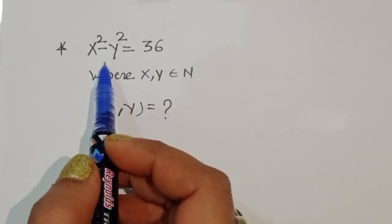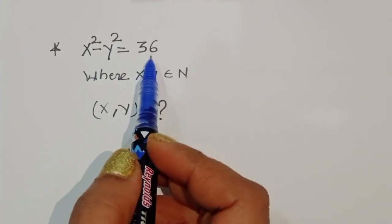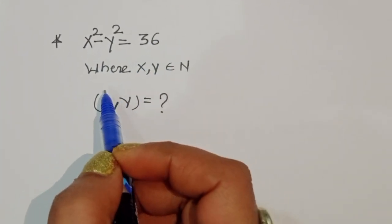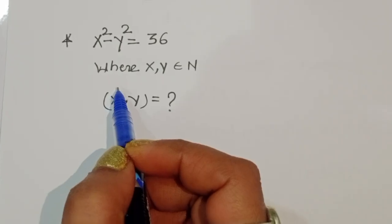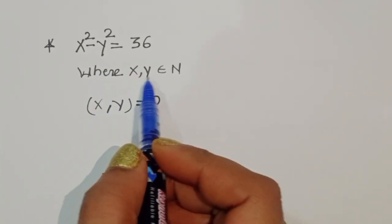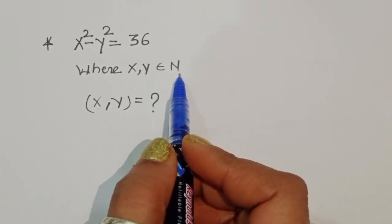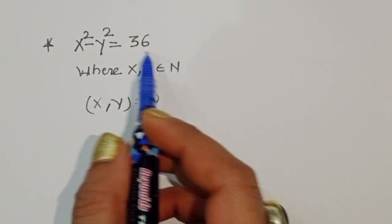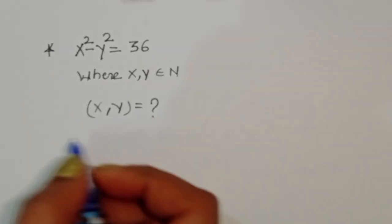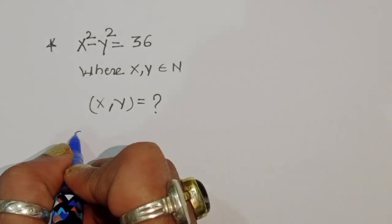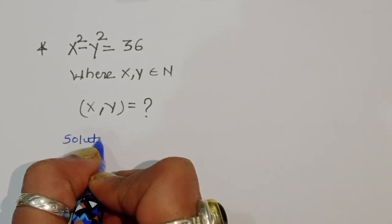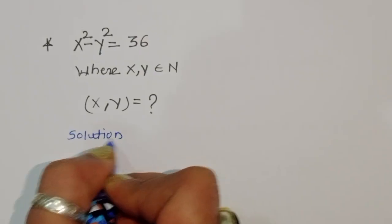The question is: given x² - y² = 36, where x and y belong to the natural numbers, we have to find out the values of x and y. Let's see how we can find the solution.